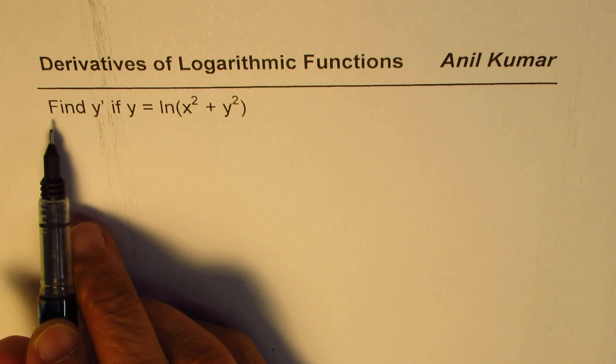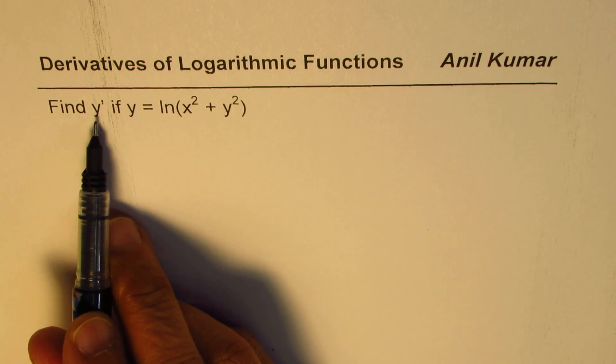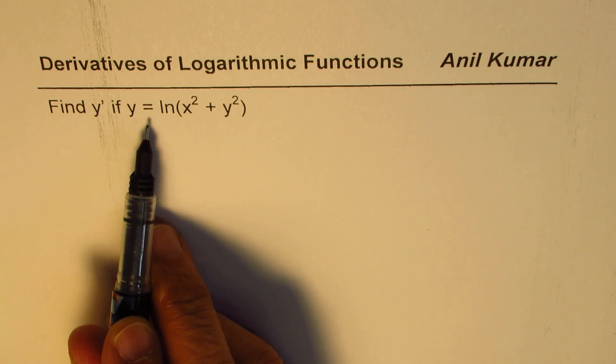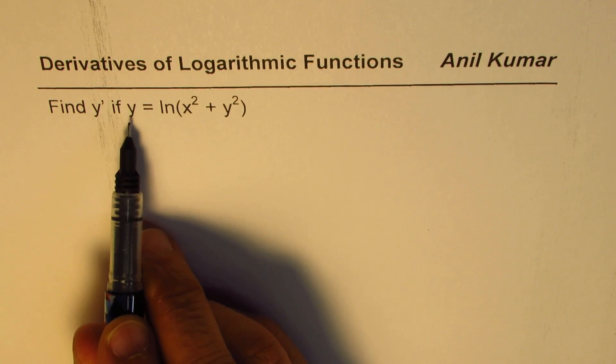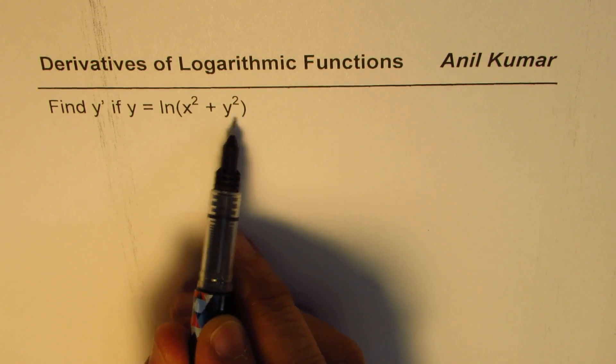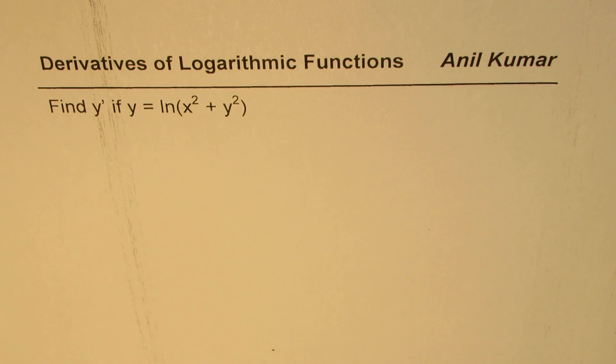The question here is find the derivative of y when y equals ln x squared plus y squared. So y is given as a function of y, so it is not explicitly given in the formula. So we'll use implicit derivation to find the derivative.